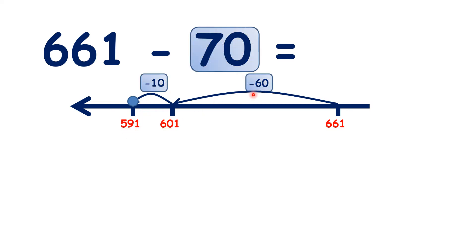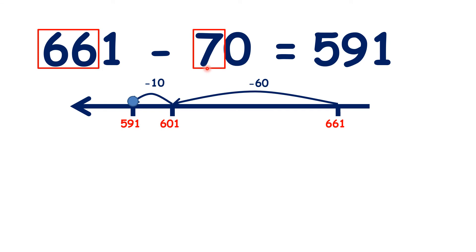So we subtracted 60, then subtracted 10, which means that we subtracted 70 altogether, and that gave us our answer, 591. So we started with 6 hundreds and 6 tens, which we can think of as being 66 tens. We subtracted 7 tens.